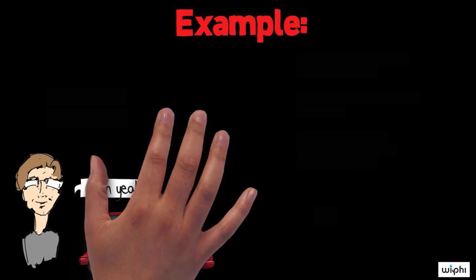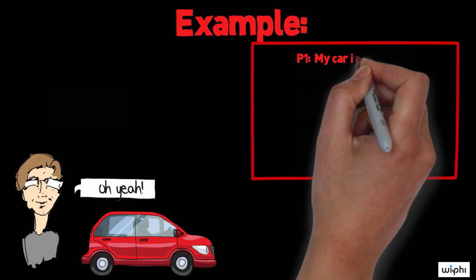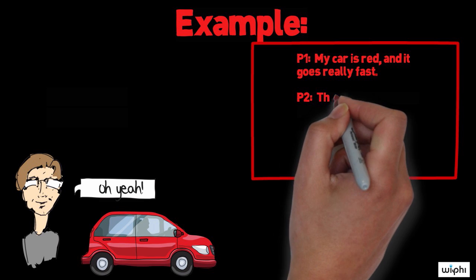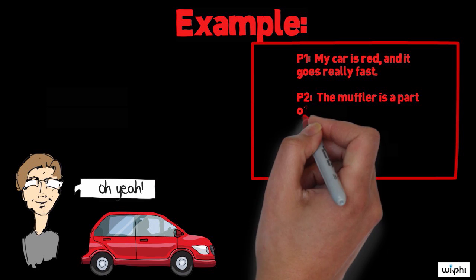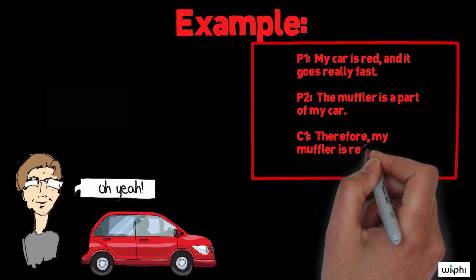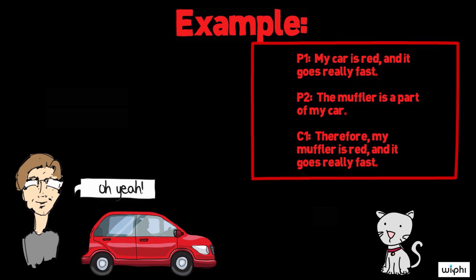Suppose that I have a car and I made this argument about my car. Premise one: my car is red and it goes really fast. Premise two: the muffler is a part of my car. Conclusion: Therefore, my car's muffler is red and goes really fast.